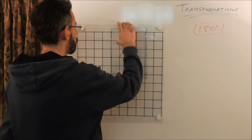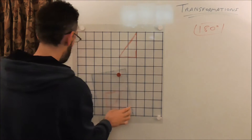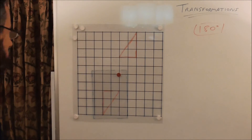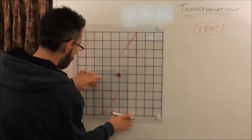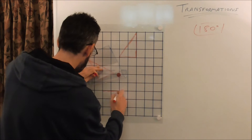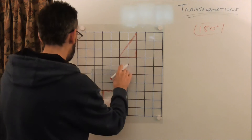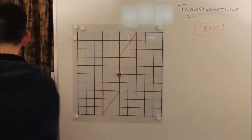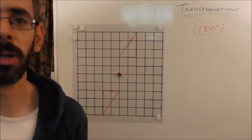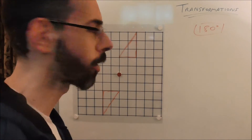You turn it 180 degrees — that's 90 degrees, that's 180 degrees — and you just draw the shape where it ends up. As you can see, it's ended up over there. So let's draw the shape in its new position. So that's it — we've rotated the shape 180 degrees using the tracing paper method.